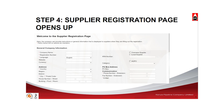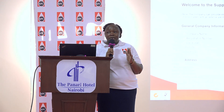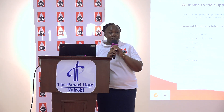Under general company information, kindly indicate the name of your company. We have noted some suppliers are not putting the name of the company under company name but instead a registration number. Please enter the name of your company so that the system can capture the name of your organization. Under registration number, enter the registration number appearing on your certificate of incorporation or certificate of registration — those beginning with CPR or BN.